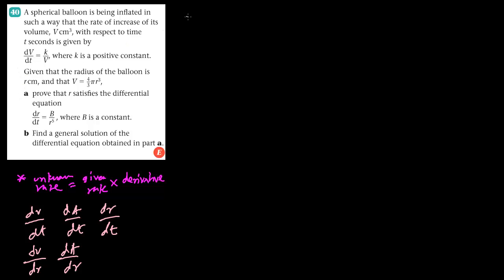So the first thing we have for this problem is a spherical balloon — it's a sphere. The volume of a sphere is 4/3 π r cubed. The rate of increase of its volume means dv by dt is given as some constant divided by v. This information is given, along with the radius and volume of the balloon.